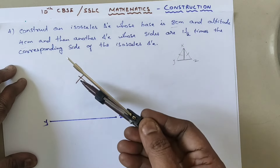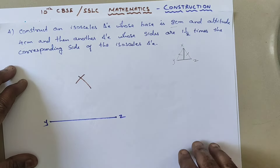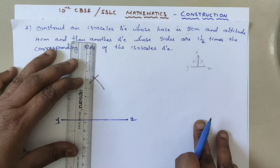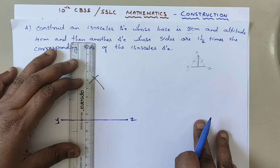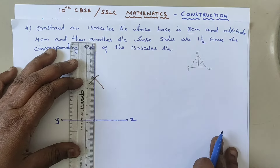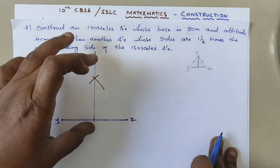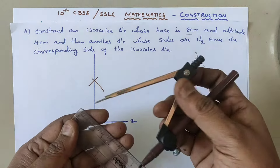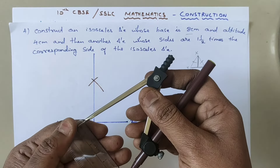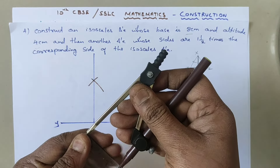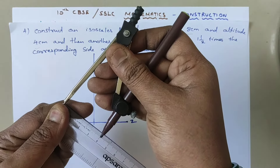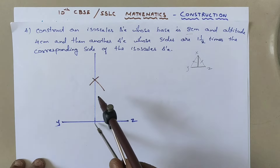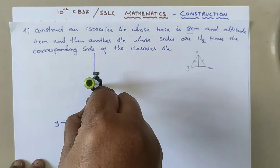These two arcs will intersect. Now draw a perpendicular line through the intersection — this is the altitude. The altitude measurement given is 4 cm, so measure exactly 4 cm on your compass. Keep the compass needle at the base of the perpendicular line and mark the point at 4 cm height.